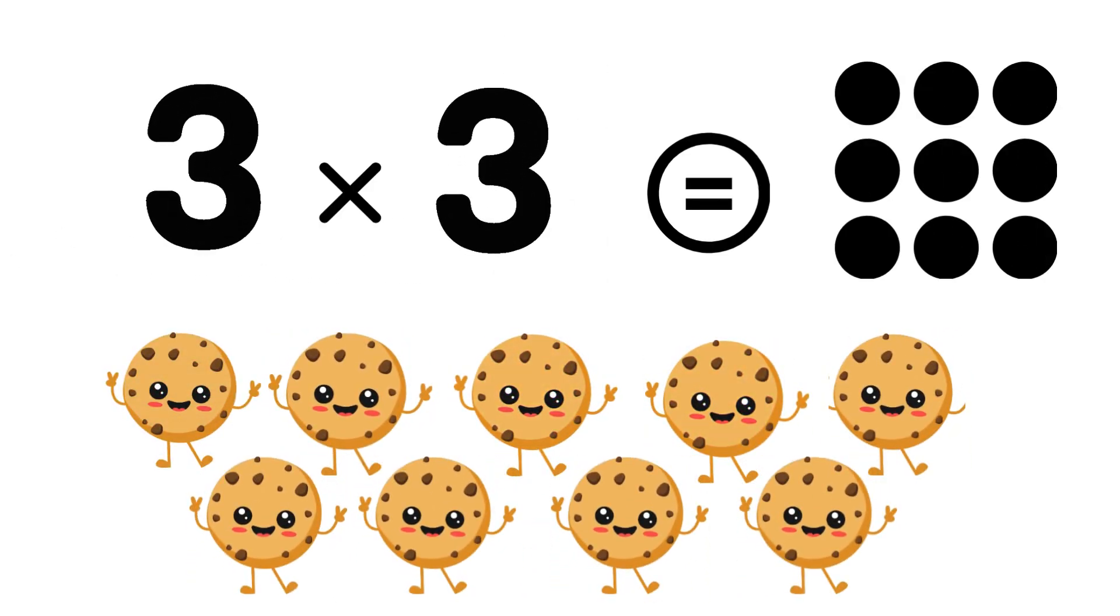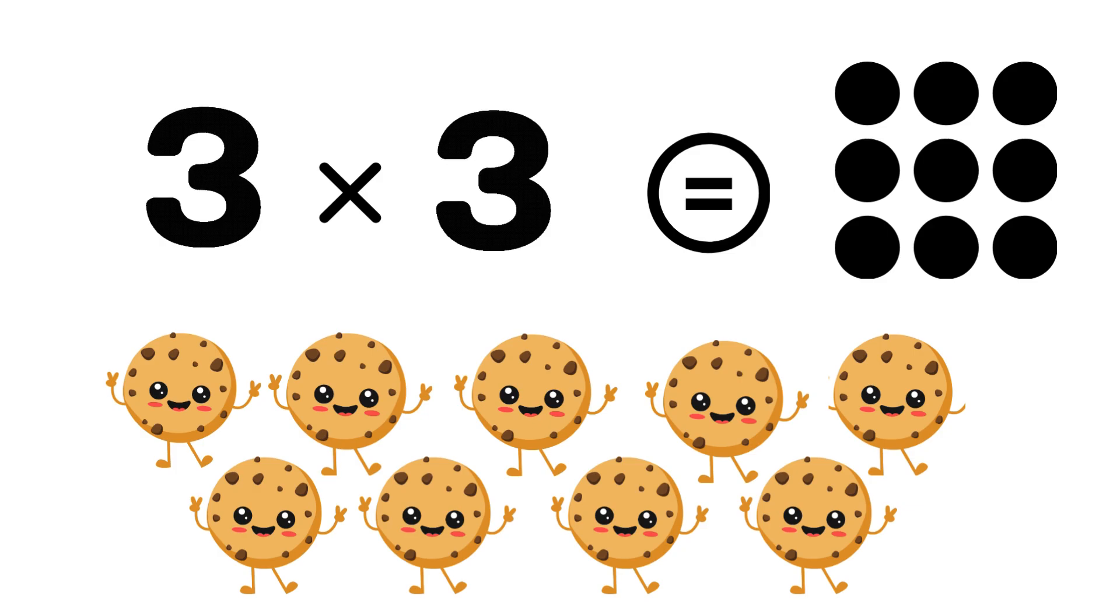Or we can say three times three equals one, two, three, four, five, six, seven, eight, nine.